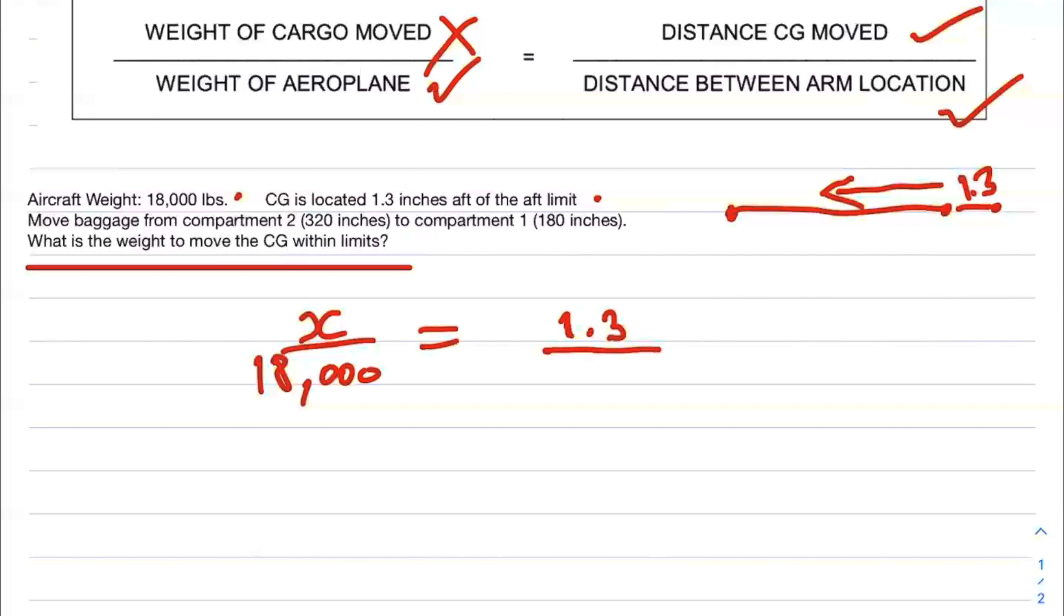Now, what's the distance between the arm locations? The arm location is measured in inches. We want to take the difference between the compartments we're going to move it from. We're moving it from compartment 2, which is at 320 inches, to compartment 1, the next baggage compartment at 180 inches. So you take the difference - I'll put it in a bracket: 320 minus 180.